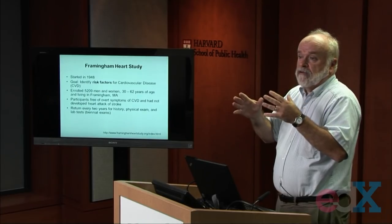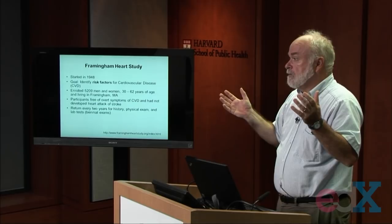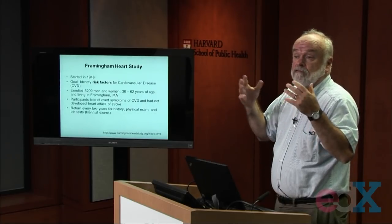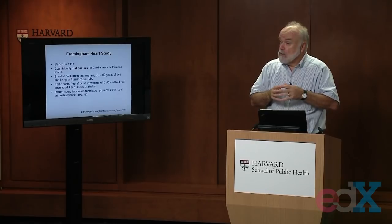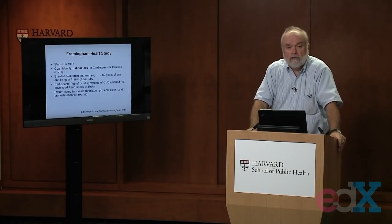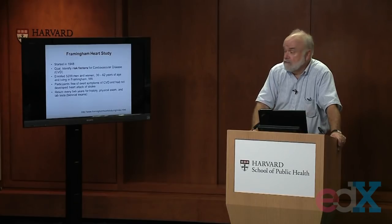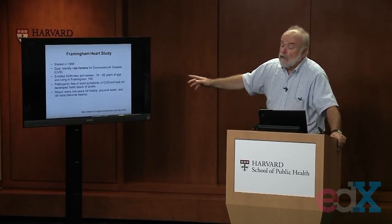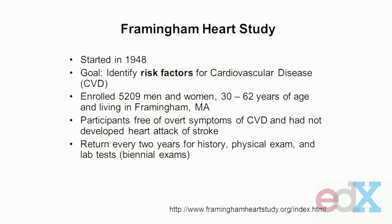It had some urban aspects to it, some rural aspects to it. It had been involved in a previous tuberculosis study, so the people were willing to be interviewed and involved in research studies. At that time, investigators wanted to answer the question: what are the risk factors for developing cardiovascular disease — stroke and heart disease. So the main goal of this study was to identify the risk factors for cardiovascular disease.